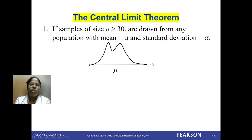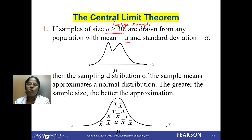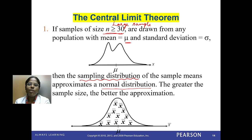Now I am going to explain the central limit theorem from this result. If the sample size n is greater than or equal to 30, it is a large sample. If it is less than 30, we call it a small sample. If the sample is drawn from any population with mean mu and standard deviation sigma, the sampling distribution of sample means approximates the normal distribution. The greater the n value, the better the approximation. That is called the central limit theorem.